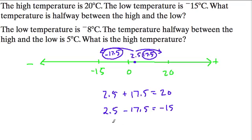Another way to think about a halfway point is to divide your total distance by 2. So to go from 20 to negative 15, we're really going a total of 35 degrees, right? Because it's 20 degrees here and 15 degrees there.